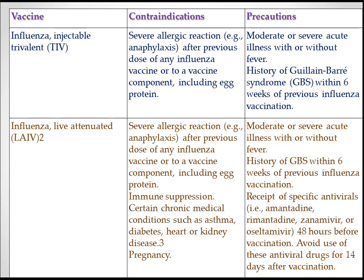This is a table on vaccine contraindications and precautions. For injectable trivalent influenza vaccine — TIV — contraindications include severe allergic reaction such as anaphylaxis to a previous dose of any influenza vaccine or to vaccine components including egg protein. Precautions include moderate or severe acute illness with or without fever, and history of Guillain-Barré syndrome within six weeks of previous influenza vaccination.